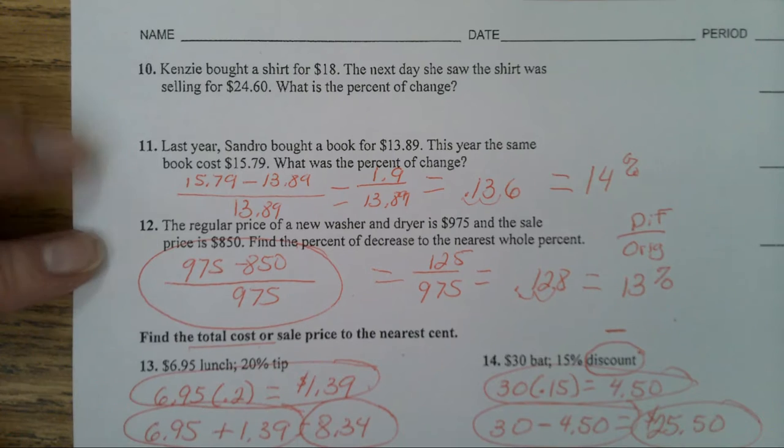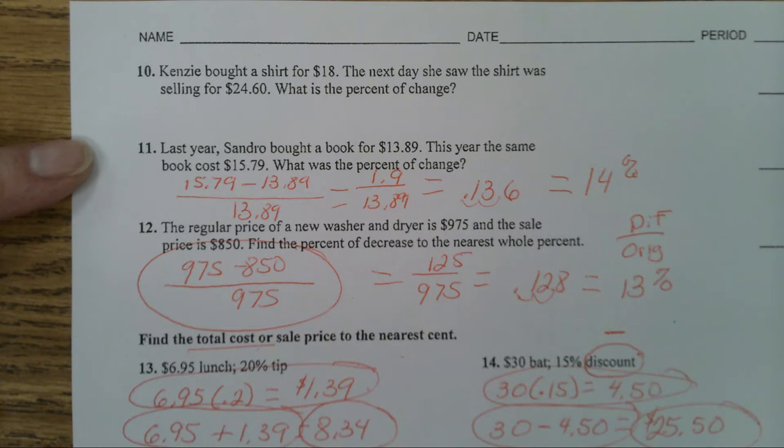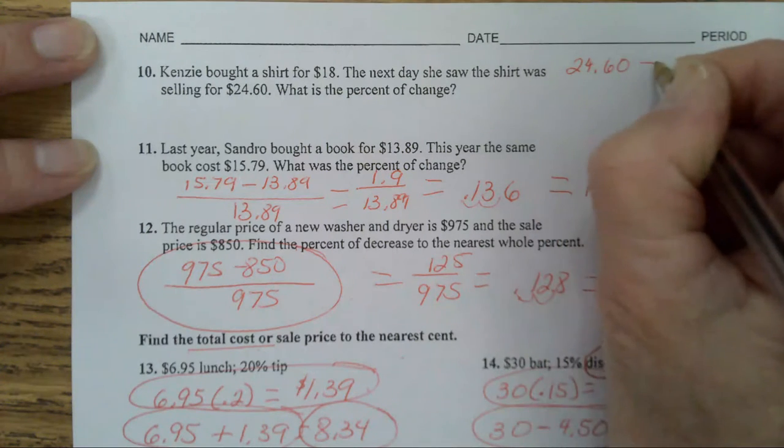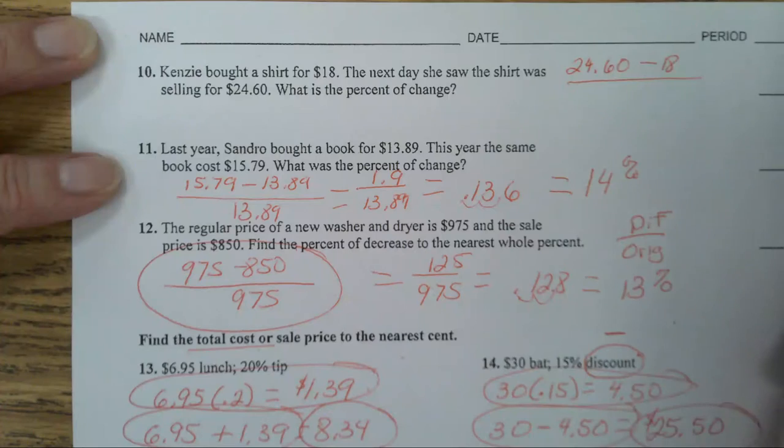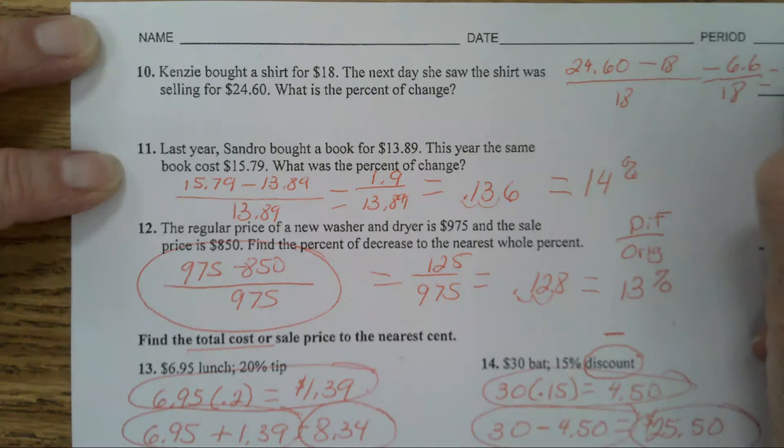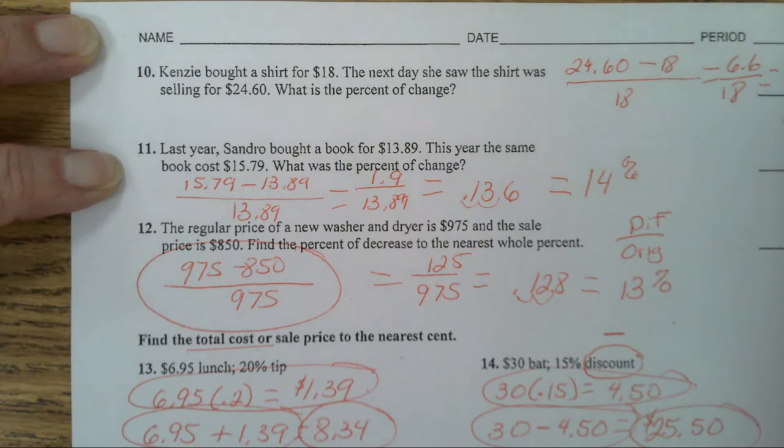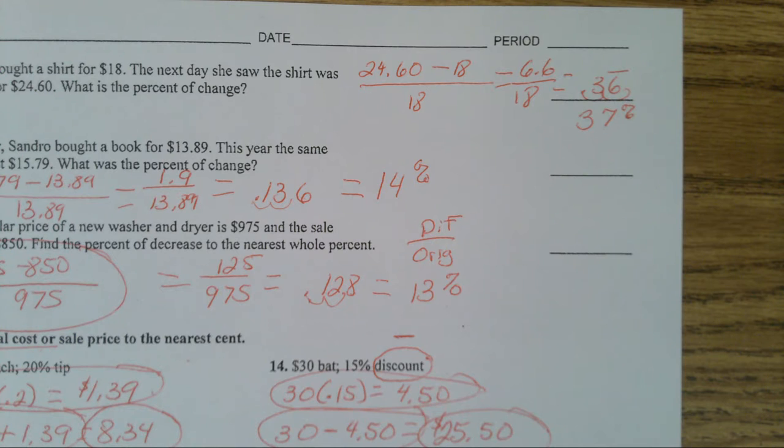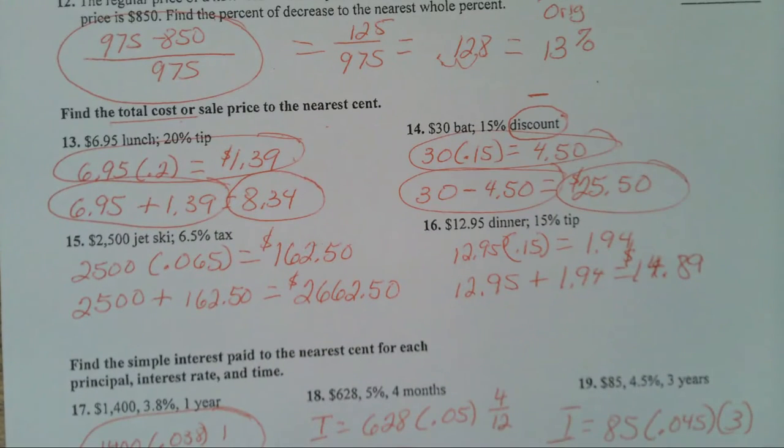In number 10, Kenzie bought a shirt for $18. The next day, she saw the shirt was selling for $24.60. All right, so $24.60 minus 18. How much was it originally? 18. So what's the difference? It's $6.60 divided by 18, gives you 0.36 repeating. So that'll be 37% increase because it went up 37%. Any questions on how to do percent of change, discounts, markups, tips, and interest?